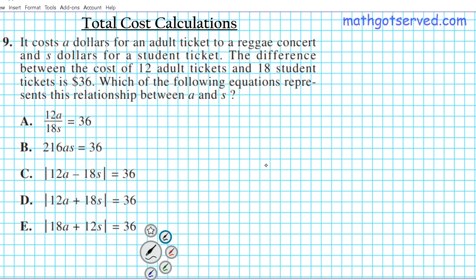But before we start, we have to go over what operation the word difference means, because it also plays a role in the determination of our equation. So we're looking at the difference between two costs, 12 adult tickets and 18 student tickets. What does difference mean? You want to remember that difference basically means subtract.